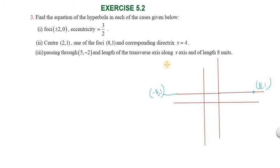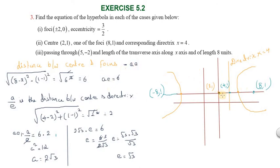So here is the main condition: directrix is x = 4. Now either on the center point — I know (2, 1) and the focus (8, 1). The distance between center and focus: using the distance formula √[(x₂−x₁)² + (y₂−y₁)²], we calculate √[(8−2)² + (1−1)²] = √[36 + 0] = 6. So ae = 6.